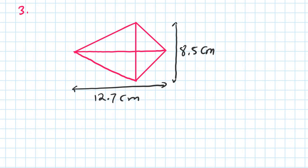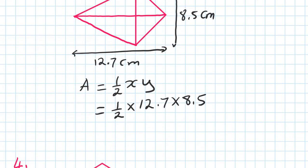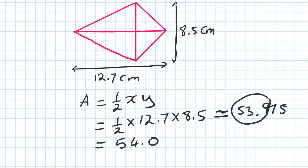Area is a half xy — a half of the two diagonals times together — which is a half times 12.7 times 8.5. Typing that into your calculator gives 53.975, which rounded to one decimal place is 54.0 centimeters squared.